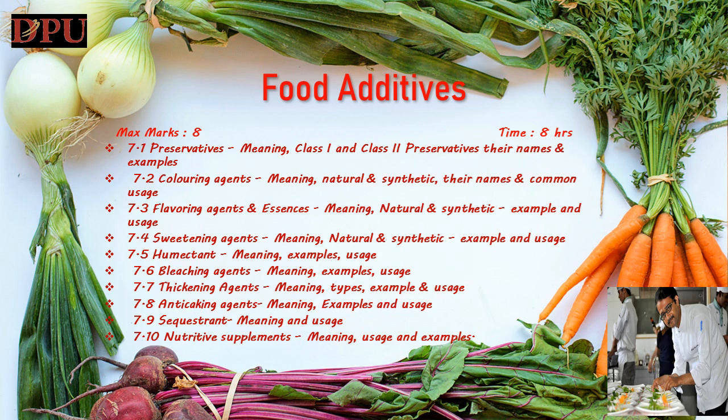Number 2, coloring agent — its meaning, types natural and synthetic, their names and common usage. Number 3, flavoring agent and essences — its meaning, types natural and synthetic, its examples and usage. Number 4, sweetening agents — its meaning, types natural and synthetic, its examples and usage.